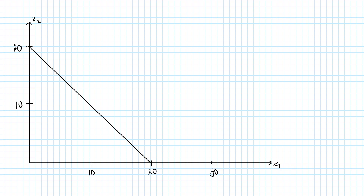Indifference curves are straight lines with a slope of minus 1. For this particular indifference curve, the total quantity of good 1 and good 2 is equal to 20 for any bundle on this indifference curve. In fact there are an infinite number of them, all straight lines with a slope of minus 1.